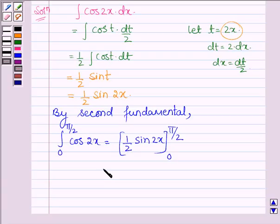This is equal to, taking 1/2 common, first putting the upper limit we have sin(2 × π/2) minus sin(2 × 0).